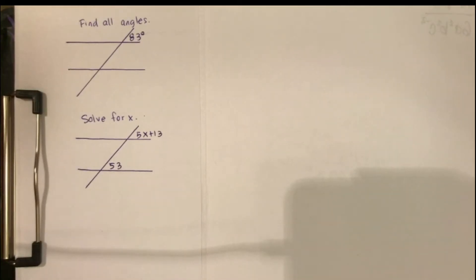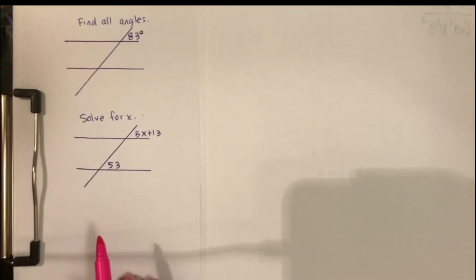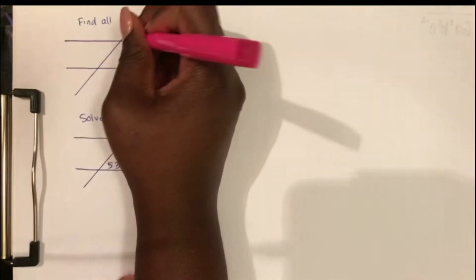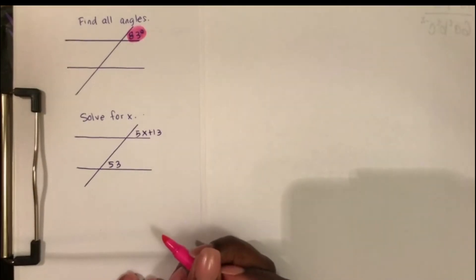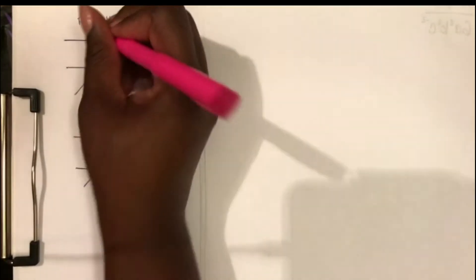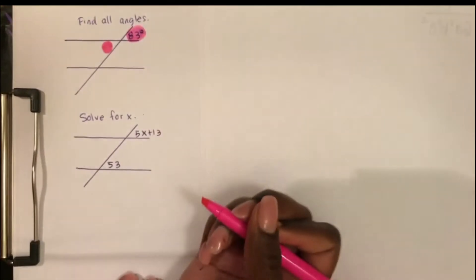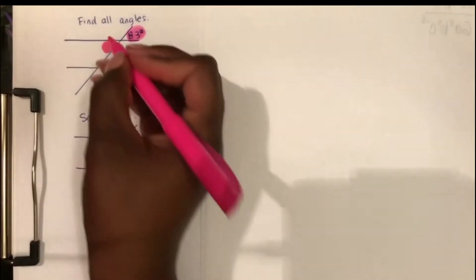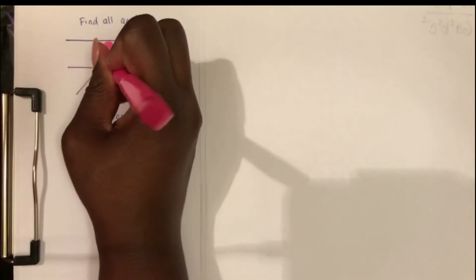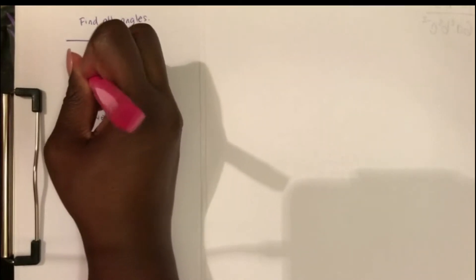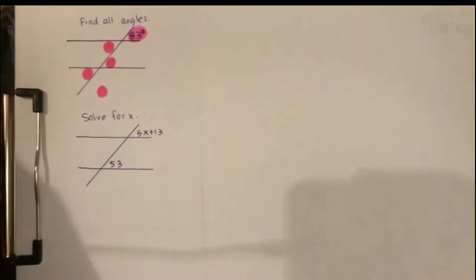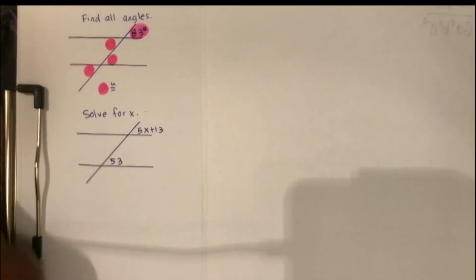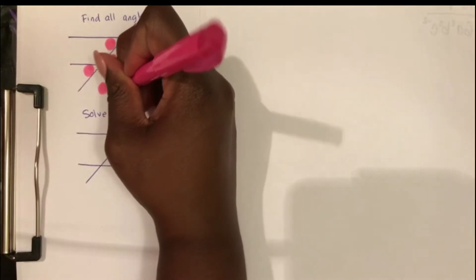When you're doing these problems with parallel lines and transversals, the first thing you want to do is highlight the angle they give you — just one of the angles — and then highlight its vertical angle, and then copy that same pattern on the next intersection. So top right corner, bottom left corner, and all of the angles highlighted are congruent to each other. Pink angles are congruent to the pink angles.